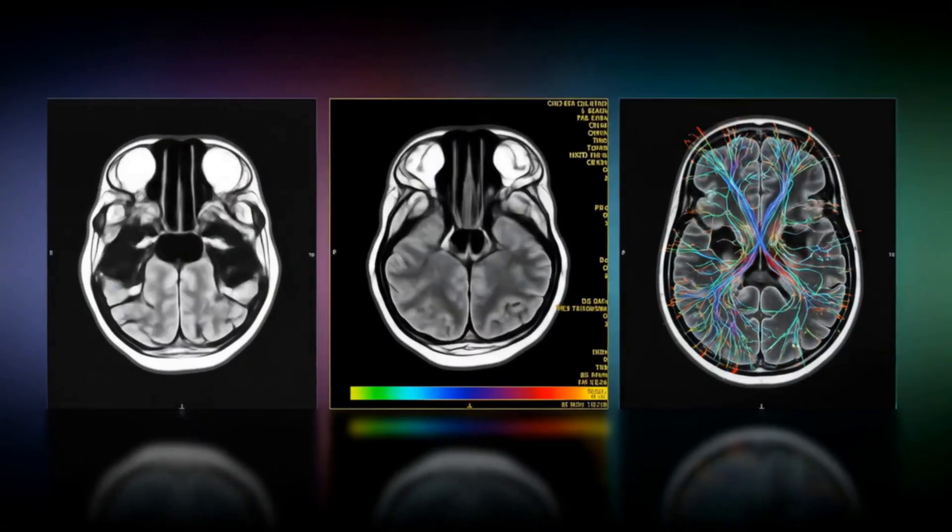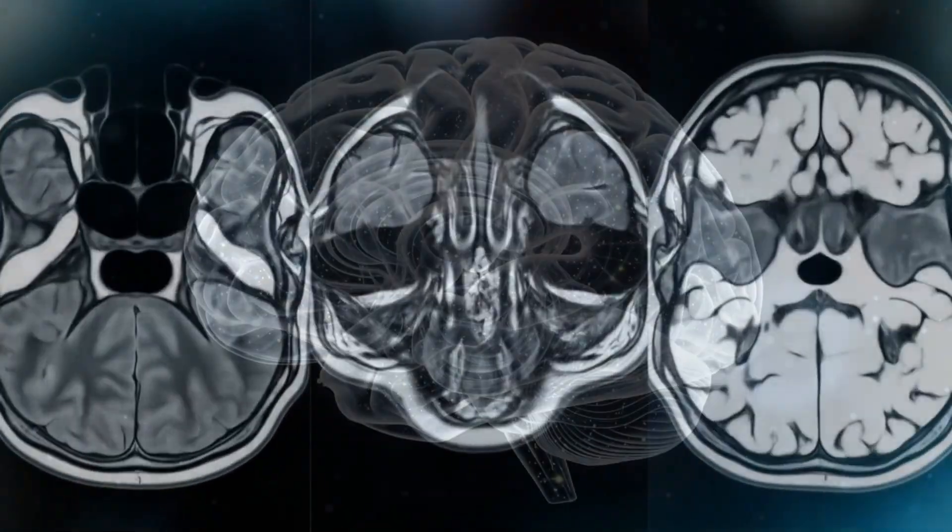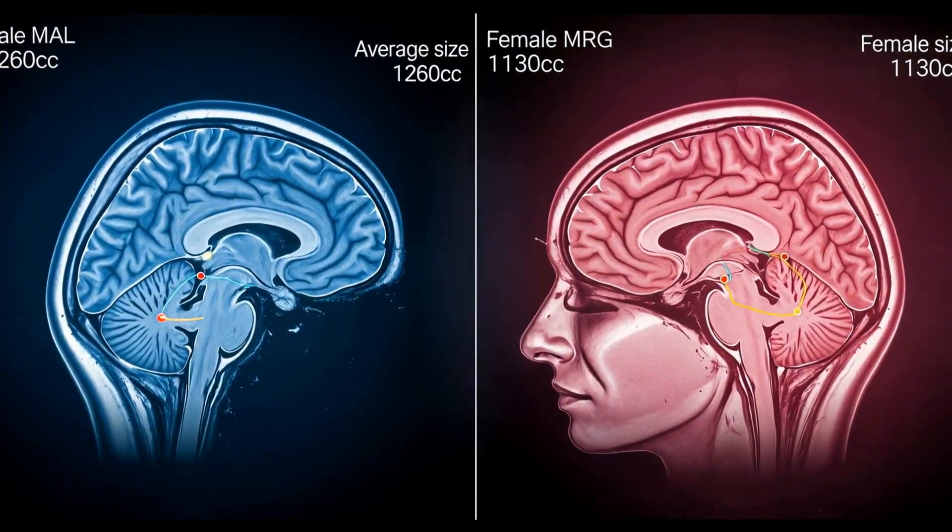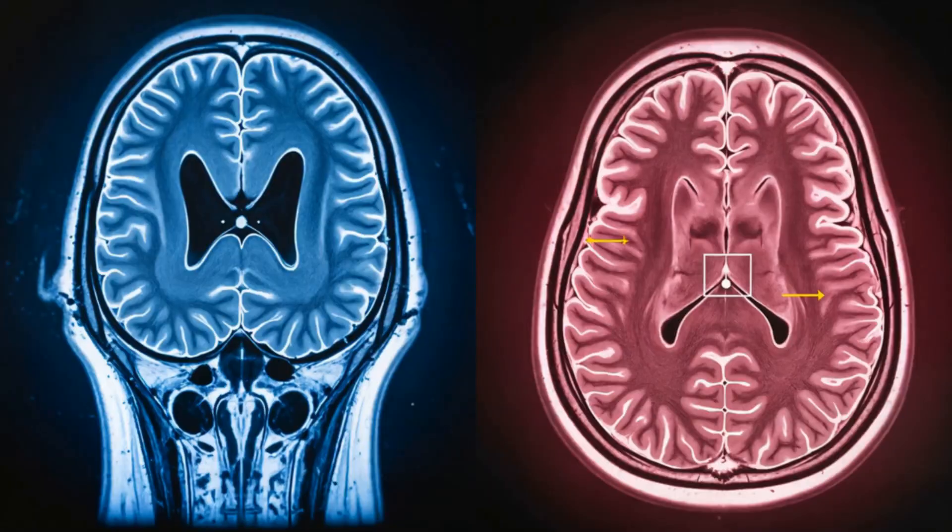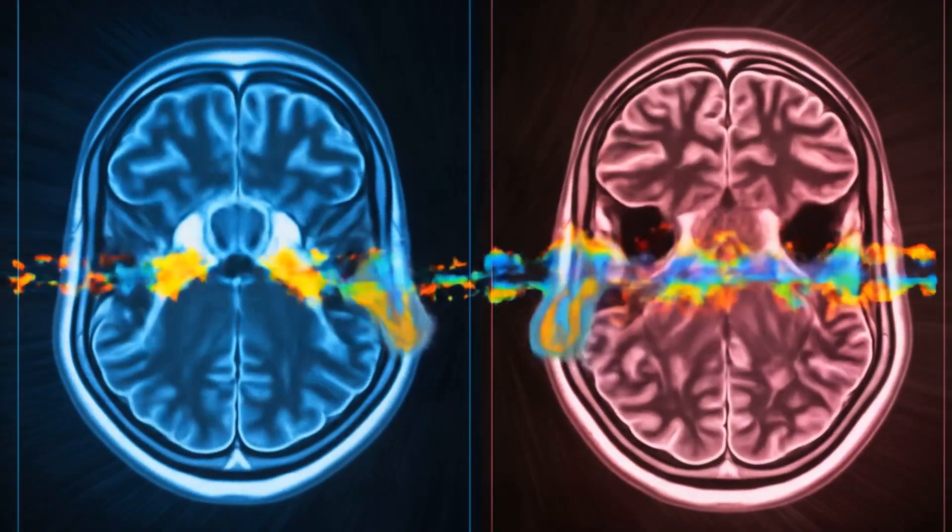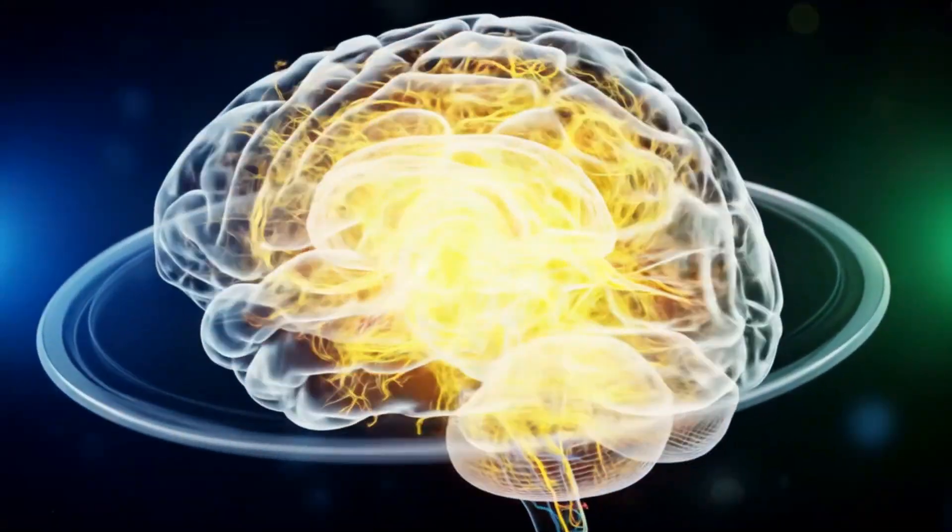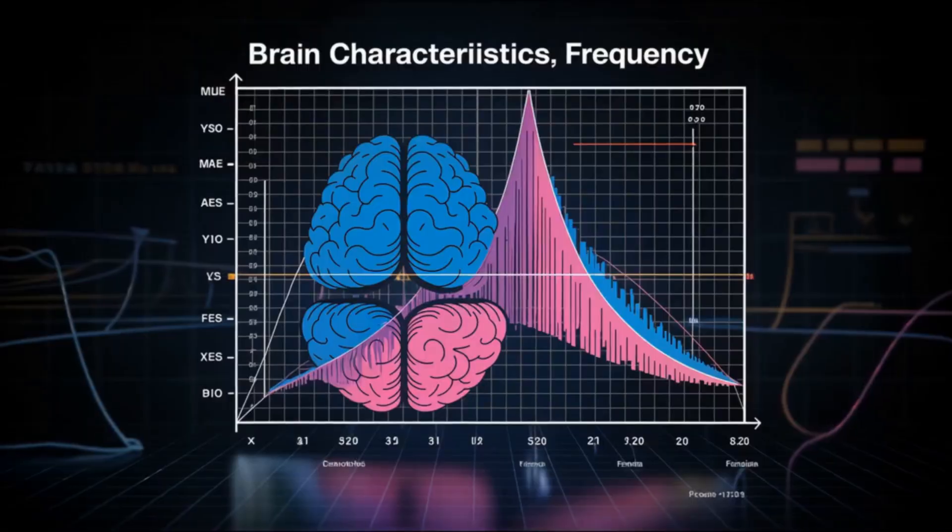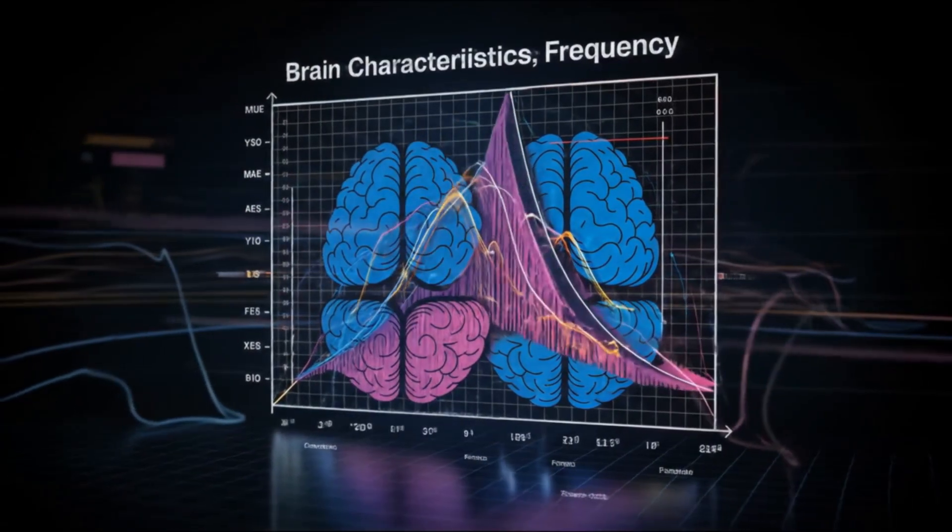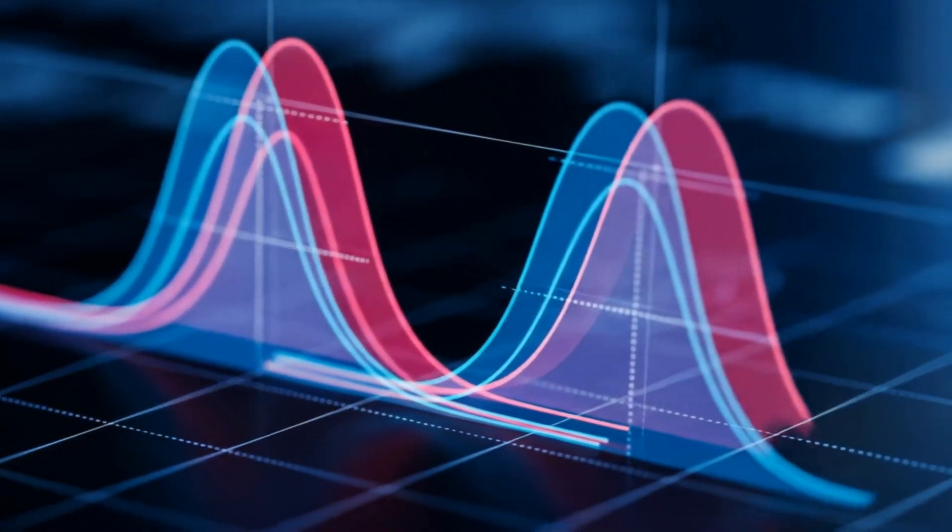Before we dive into the differences or similarities between male and female brains, we need to understand how scientists actually study these squishy thinking machines. It's not like we can just pop open someone's skull and have a look. Instead, we use some seriously cool tech. We've got MRI scans that give us detailed 3D images of brain structure, fMRI that shows us which parts of the brain light up during different activities, and even something called diffusion tensor imaging that maps out the brain's internal wiring. And this is crucial: when scientists talk about differences between male and female brains, they're usually talking about averages. There's a massive overlap, and that's something we need to keep in mind throughout this whole discussion.